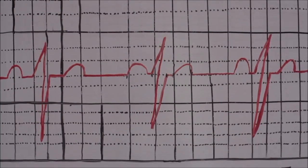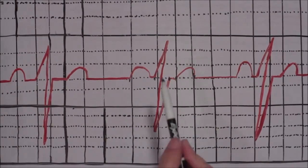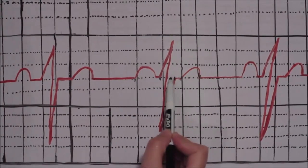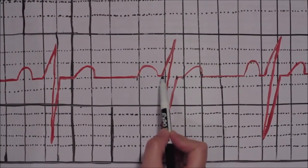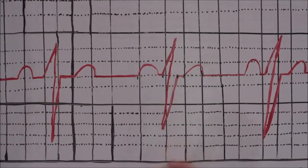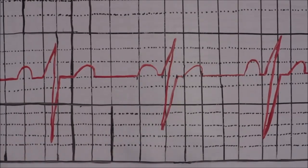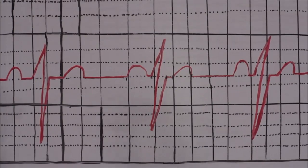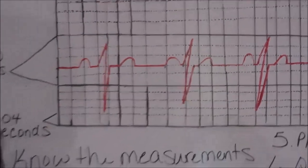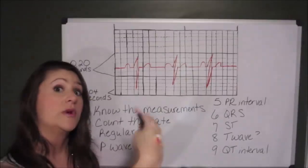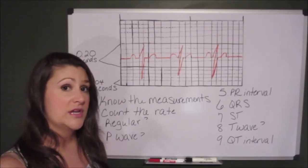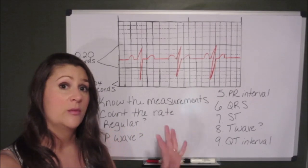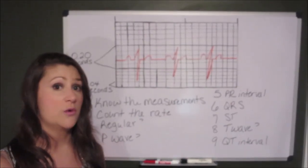QRS interval. Start here where the Q starts to leave the baseline. Stop counting here where the S wave returns to the baseline. This one would be about 1 small box length, 1 small box is 0.04 seconds. That's well within our parameters. Any QRS interval that is longer than 0.12 seconds, which would be 3 small boxes, would indicate that there is a bundle branch block. Meaning that there is a problem with conduction through the bundle branches. A problem with electrical conduction. That doesn't mean that there is a physical blockage.